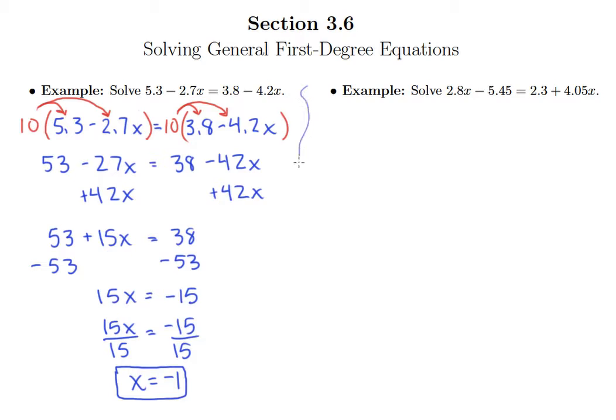Now, multiplying by 10 is not always the answer. So let's take a look at this example here. So we have 2.8x minus 5.45 equals 2.3 plus 4.05x.